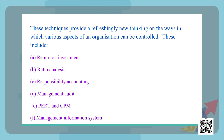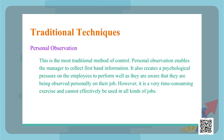The first type of traditional technique is personal observation. This is the most traditional technique used for controlling. Under this method, the supervisor personally observes the performance of every worker throughout the organization and judges them on the basis of the standard set. He also advises them to take corrective action and provides feedback to both management and workers.